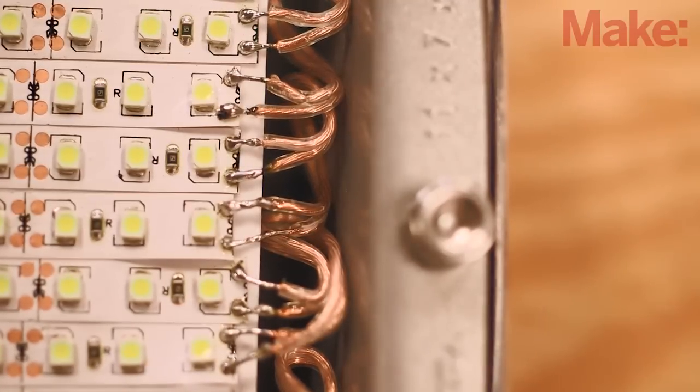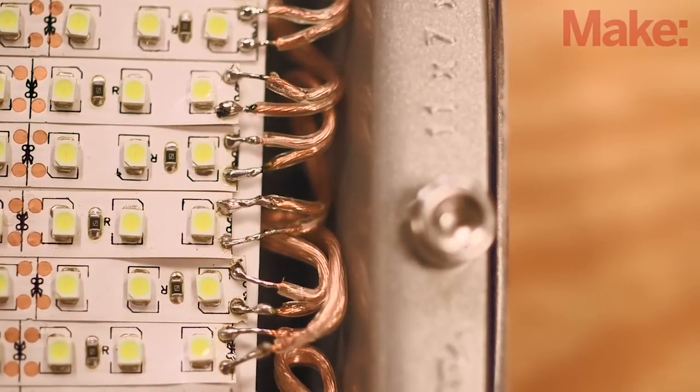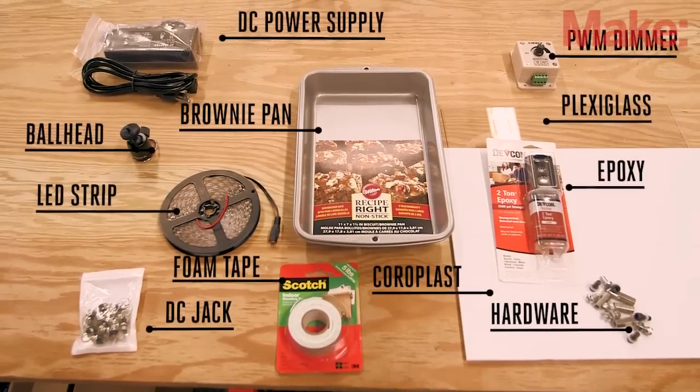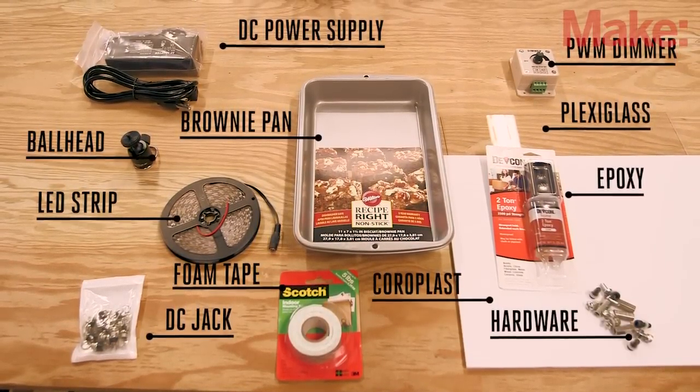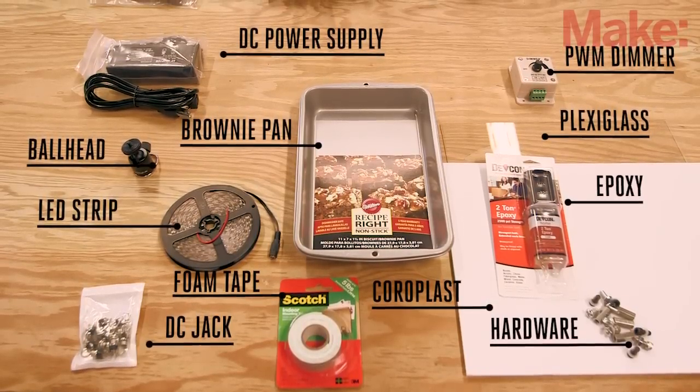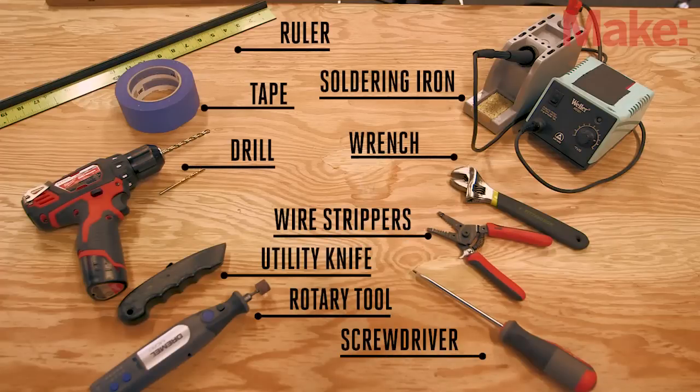There's a lot of soldering in this project, but it's all basic stuff, so this is a great project to help build your skills. To build this project, you'll need the LED strip lighting, a power supply, the housing material, and some hardware. What you can't find at your local hardware store, you can easily purchase online. You'll also need a couple of basic tools.